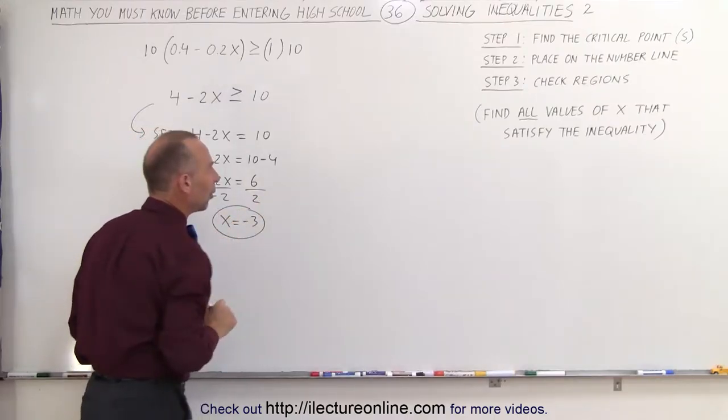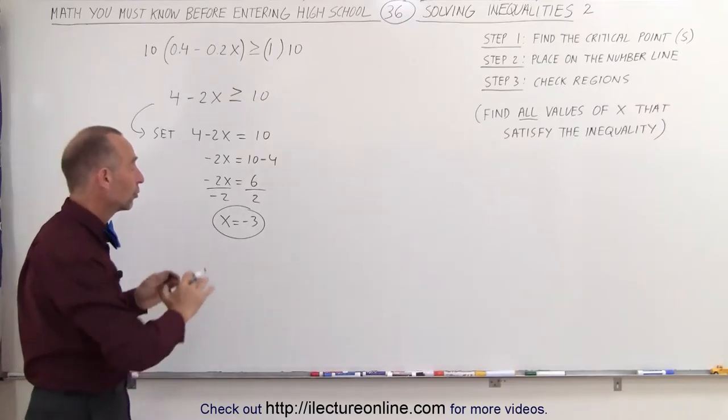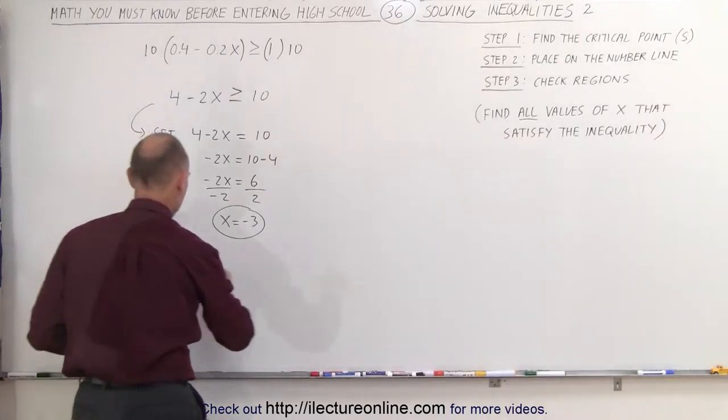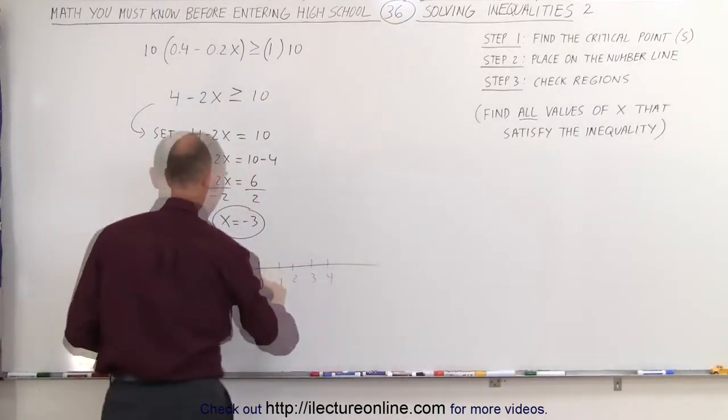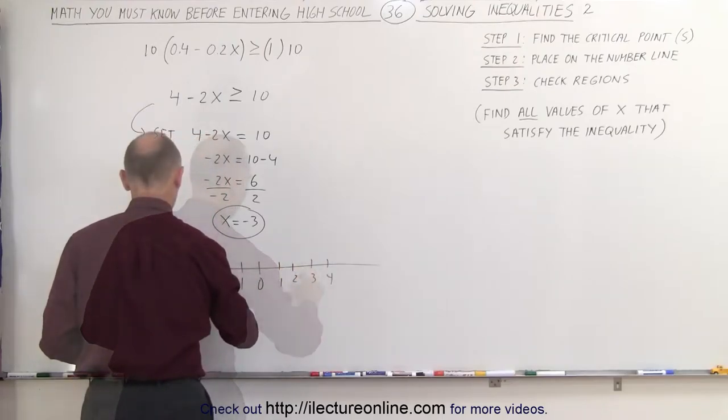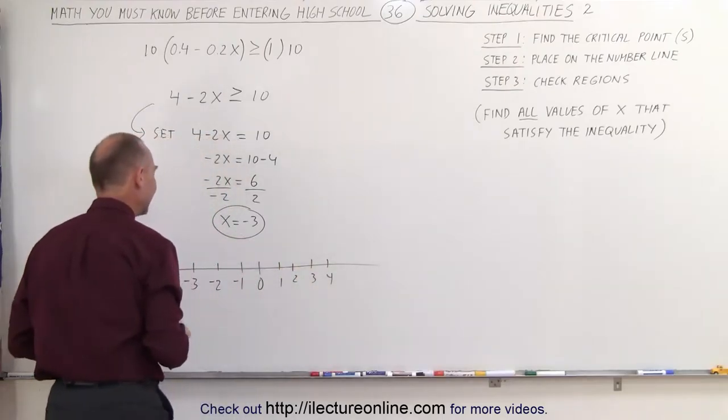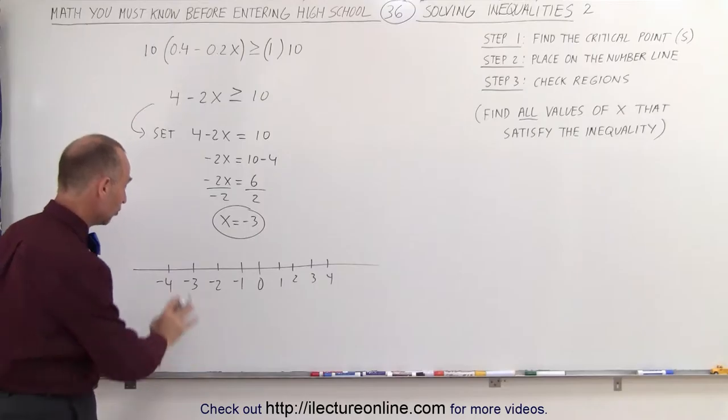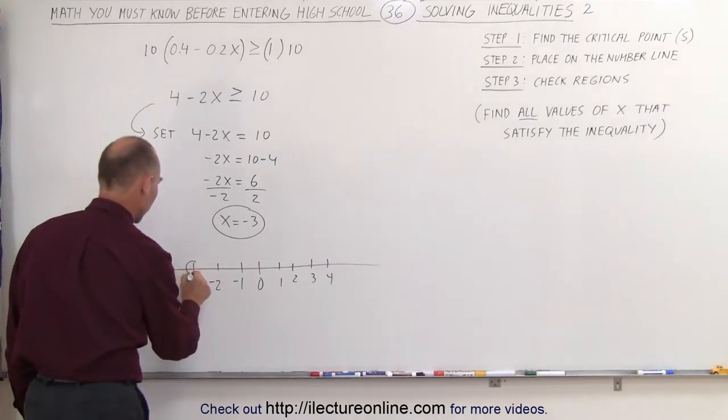The next step is we're going to draw a number line: -4, -3, -2, -1, 0, 1. Then we're going to locate that critical point. It's right here. We draw a circle around it.